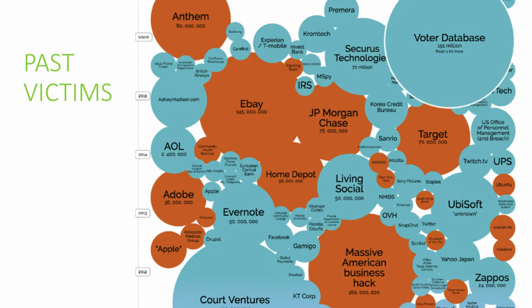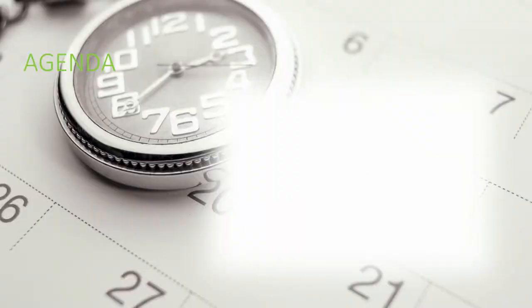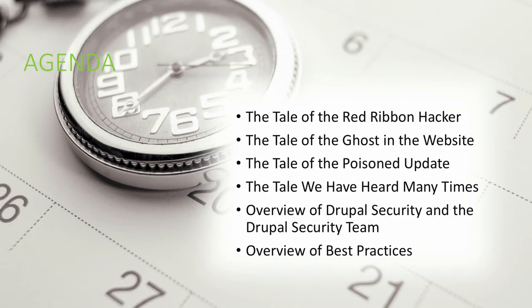Those records are very valuable. What's ironic is that one of the things on this chart actually covers how Equifax got compromised. We're going to get into three tales today, and then talk about the security team itself and best practices.